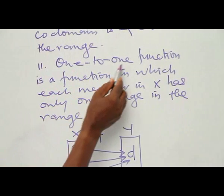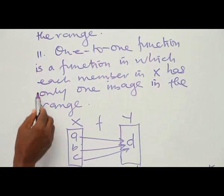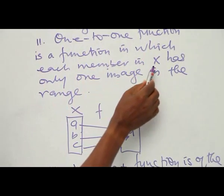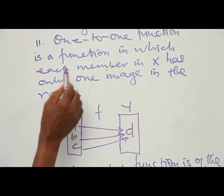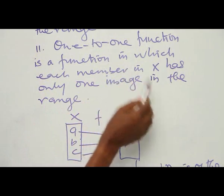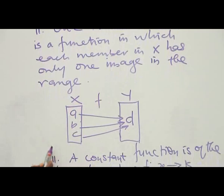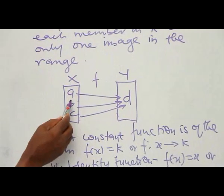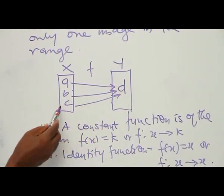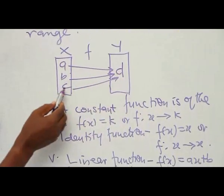Number two: the one-to-one function. A one-to-one function is a function in which each member in S (the domain) has only one image in the range. In the diagram, each element A, B, and C in the domain all have one distinct image in the co-domain.